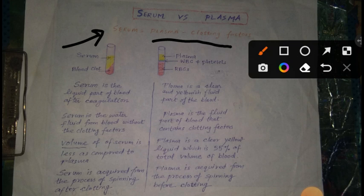Jaisa ki yaha par figure me deekh pa rae hai, is figure me deekh rae hai test tube hai. Or test tube me niche blood clot present hai, or oopar hain joh portion dikhai dhe ra hai fluid portion, voh serum kehlaayega. Is fluid portion me clotting factors nahi hai, kyaoki clotting factors ne clot ko form karne me help ki hai. Toh clotting factors to blood clot me present hai, serum me woh absent hai.